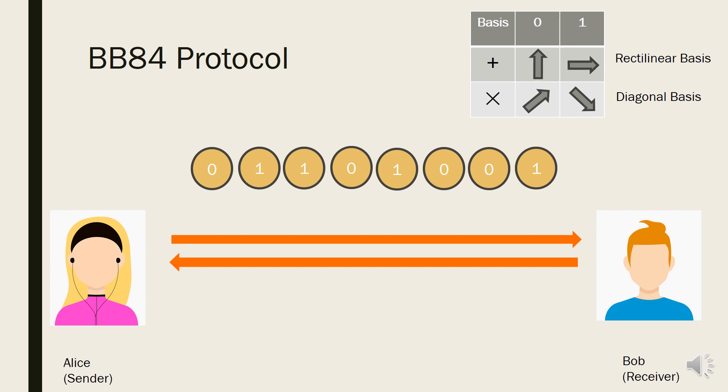So if Alice's bits are chosen like this example, Alice can choose the bases for each bit like this. Because for the first bit 0, Alice has chosen rectilinear bases, the photon polarized signal for the first bit becomes vertical 90 degree bit value. And by changing all the bits in the same way, Alice's bits are changed into this photon polarized signal.